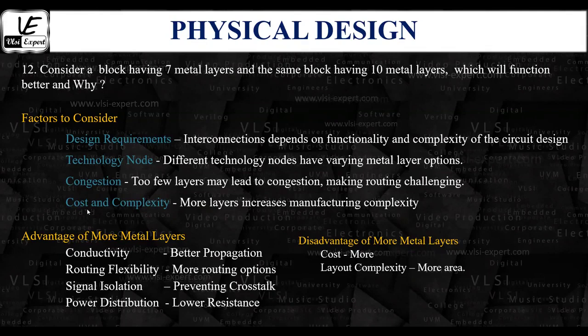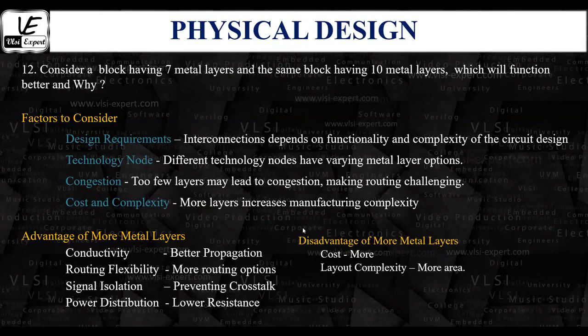The next factor is congestion. When using fewer metal layers, routing resources are simpler to manage, but limited metal layers can result in congestion. When too many wires need to be routed through a limited number of tracks, congestion occurs due to restricted routing resources, making routing very challenging. Fewer metal layers may also limit the flexibility to route signals efficiently, especially in complex designs. To ease congestion and enable better routing, more metal layers can be used.